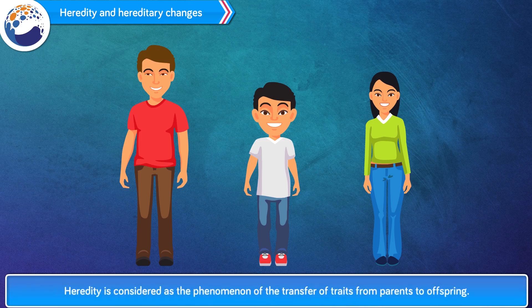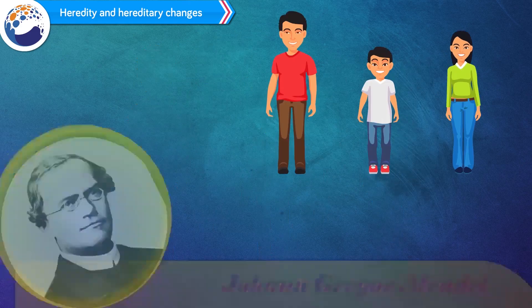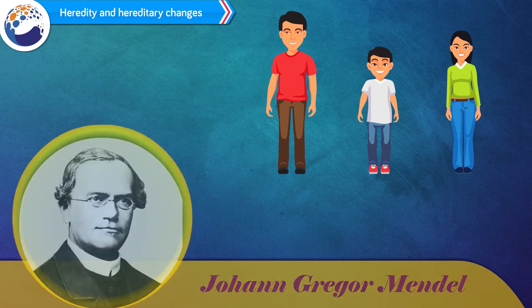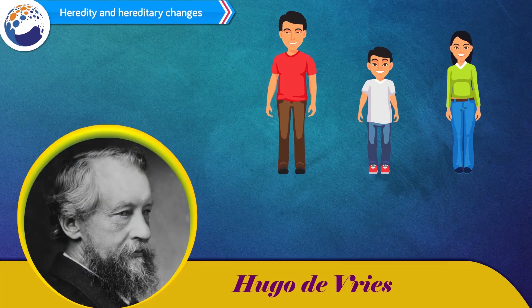Heredity is considered as the phenomenon of the transfer of traits from parents to offspring. Johan Gregor Mendel is the scientist who explained the basic principles of heredity. Later, the mutational theory of Hugo de Vries postulated that the formation of new species and varieties are due to mutation.